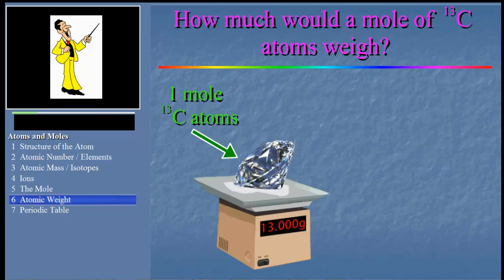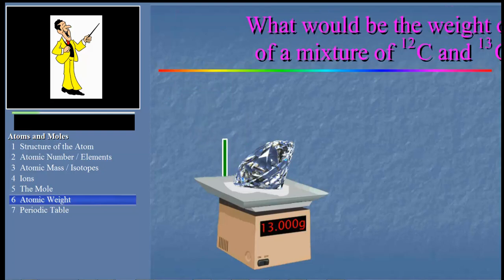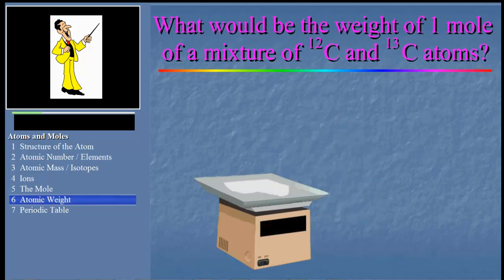But now try this. What if we have a mixture of the isotopes, that is, of carbon-12 and carbon-13 atoms? What would be the weight of one mole then? Well, the weight would be between 12 and 13 grams depending on the relative amount of carbon-12 and carbon-13 atoms. And actually, this is a much more realistic situation.